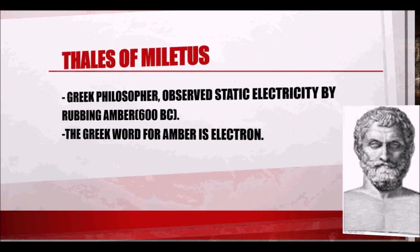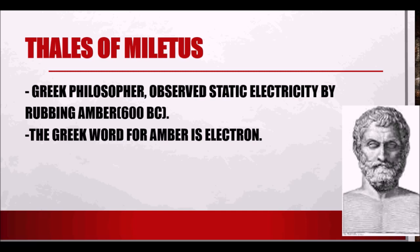We start with Thales of Miletus, a Greek philosopher who observed static electricity by rubbing amber, around 600 BC. The Greeks were very intelligent people, and Thales observed static electricity by rubbing amber on cloth or ship wall. The Greek word for amber is 'electron,' and that is where the word electron came from.